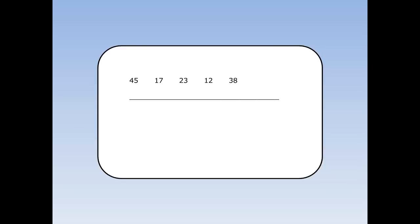To find the mean of these five numbers, first of all, we add up all the numbers. They add up to 135. And then we do 135 divided by 5, and that's equal to 27. 27 is the mean.